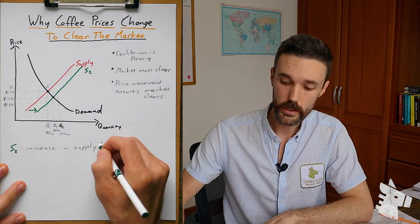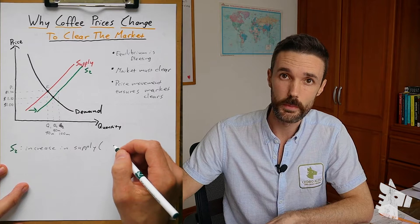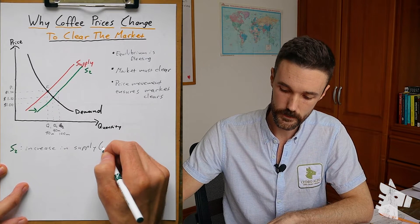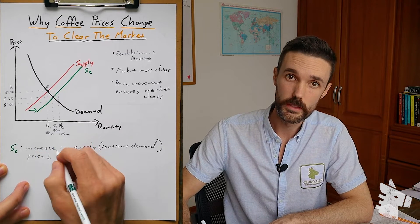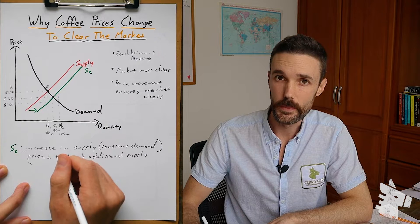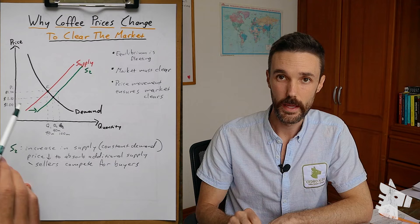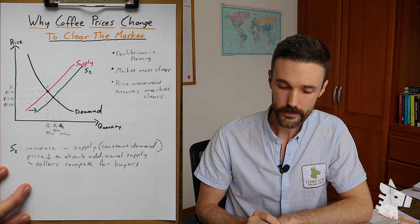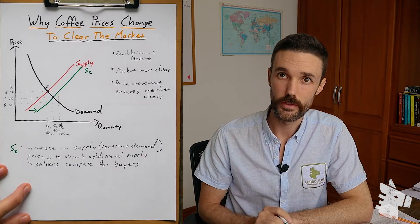So in summary, because the quantity offered, supplied, increased, the only way to make sure all of that coffee got sold was to lower the price. So in this example, supply S2, there was an increase in supply. In this graph, we're assuming a constant demand, although of course, in reality, that's impossible because both curves are always changing. Price falls in order to absorb additional supply. It falls because sellers need to compete for buyers. Buyers who are satiated by 80 million bags need some additional motivation if they're going to take additional coffee.